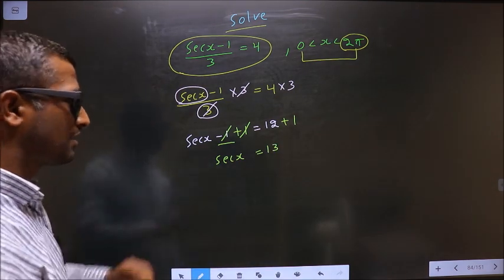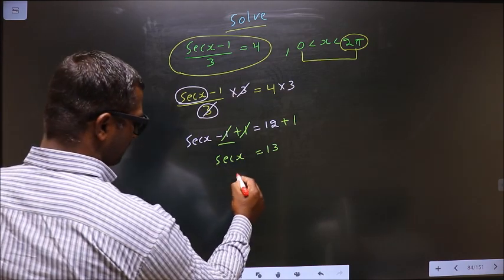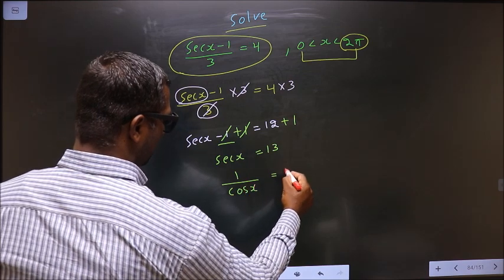After this, you change secant to cos. So secant x is nothing but 1 by cos x equal to 13.